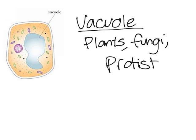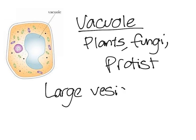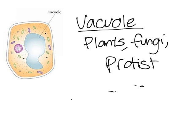In general, vacuoles are sacs. They are essentially large vesicles that store materials that you have in excess. There are also contractile vacuoles that actually pump out water when the plant cell has too much water. Keep in mind, when we discuss the vacuole here, this is a plant vacuole.